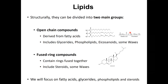The second structural type is fused ring compounds, which include steroids and some other waxes formed by fatty acids combined with sterols instead of linear alcohols. These compounds all typically contain a ring structure of carbon and hydrogen modified by different functional groups. In this lecture I will focus only on fatty acids, glycerides, phospholipids, and steroids, as these are the main lipids we will encounter throughout the course.